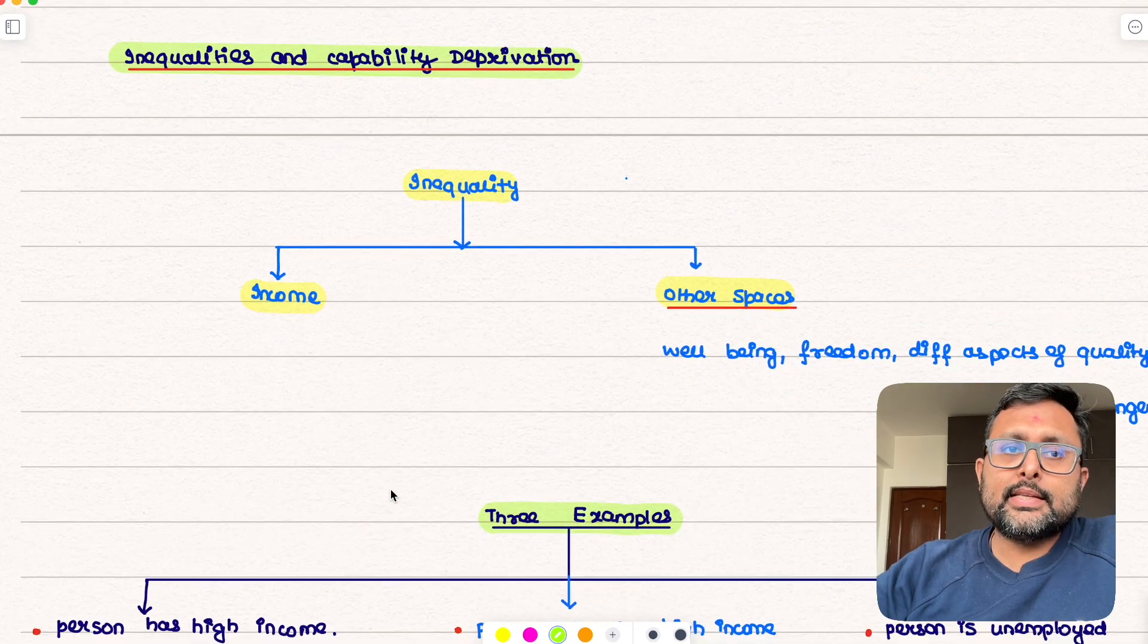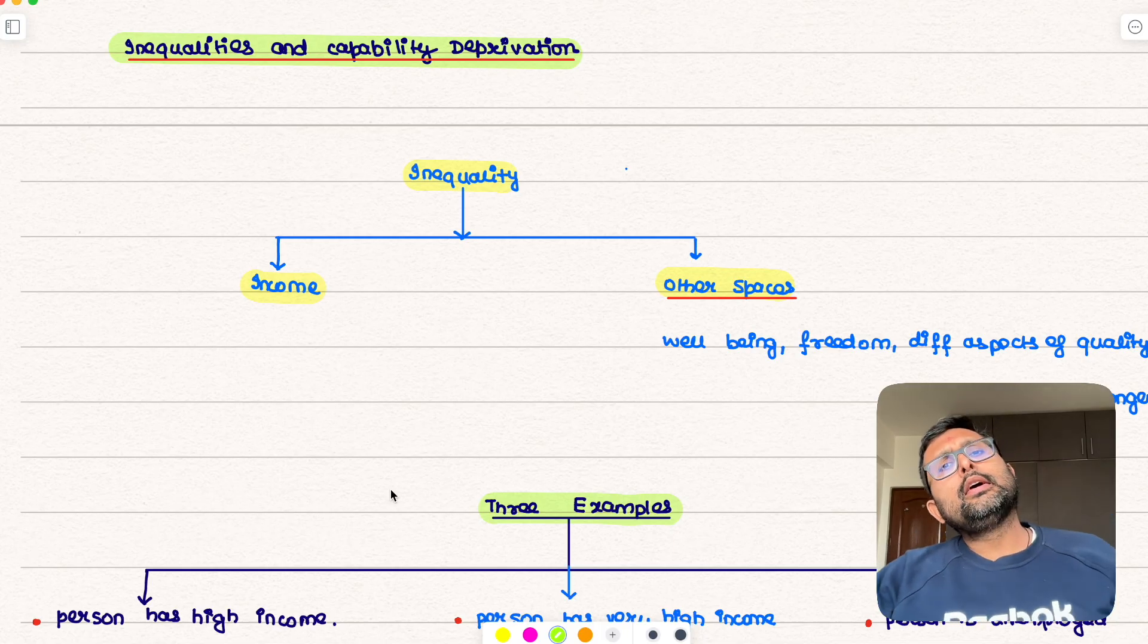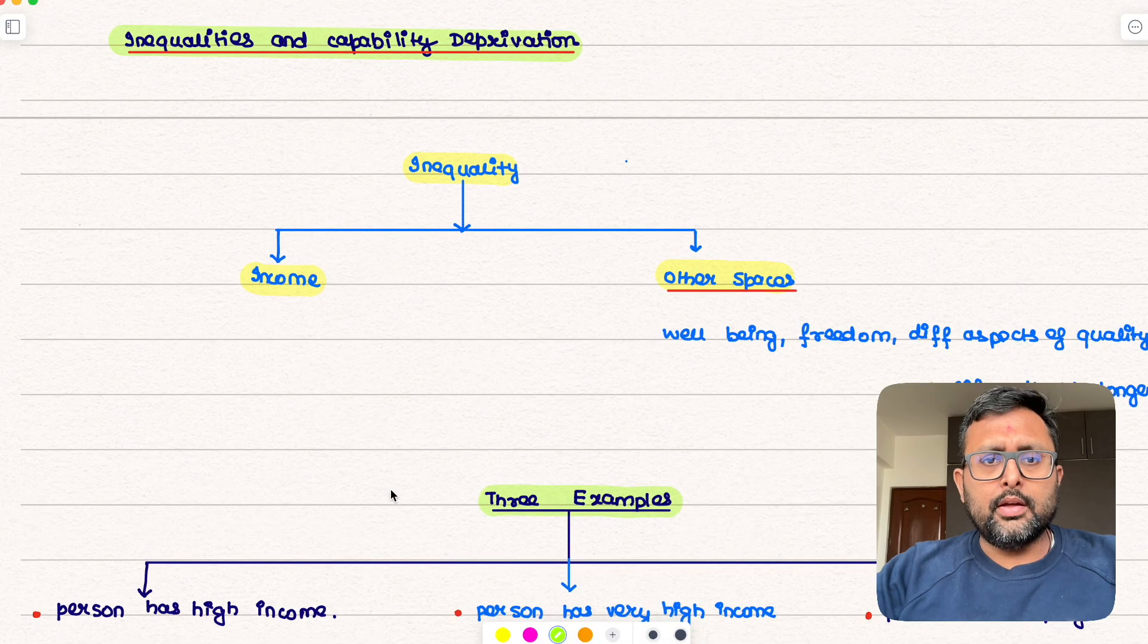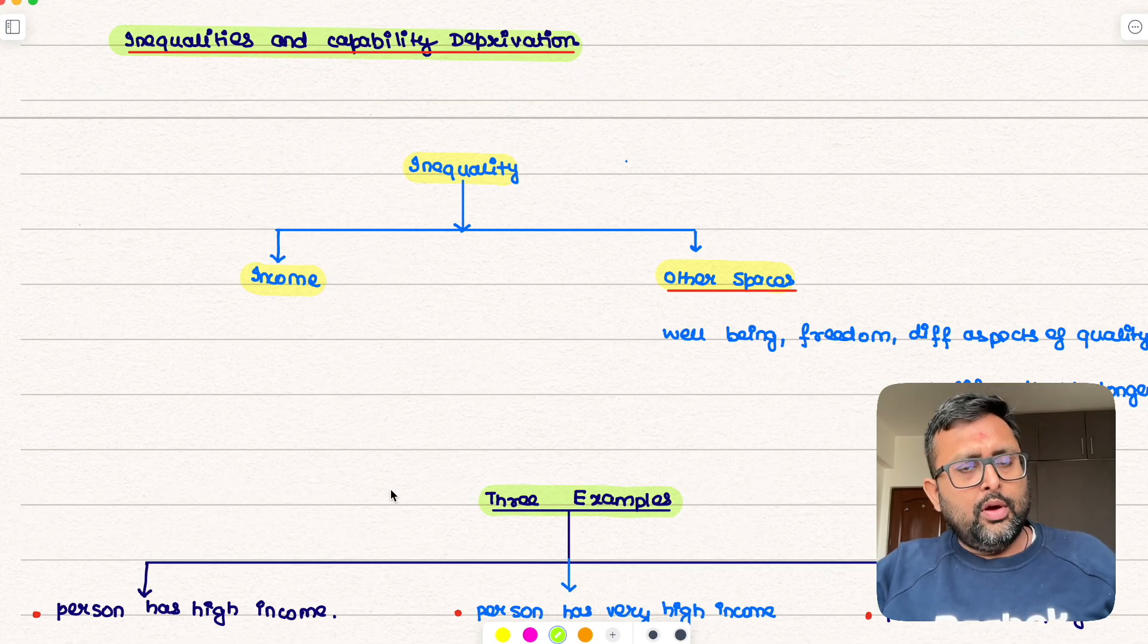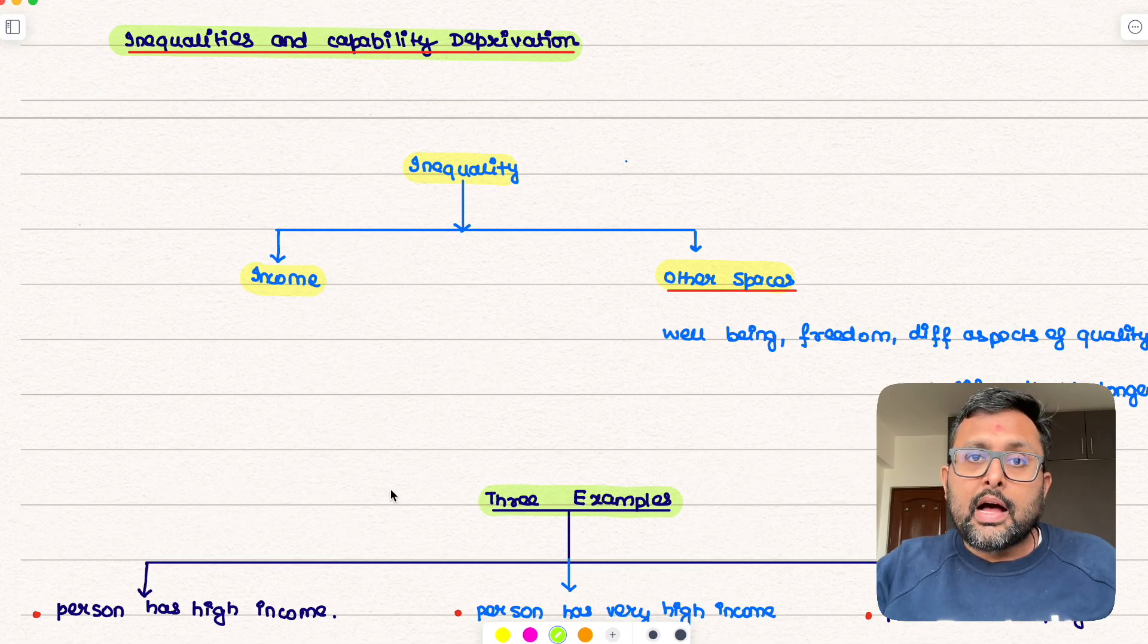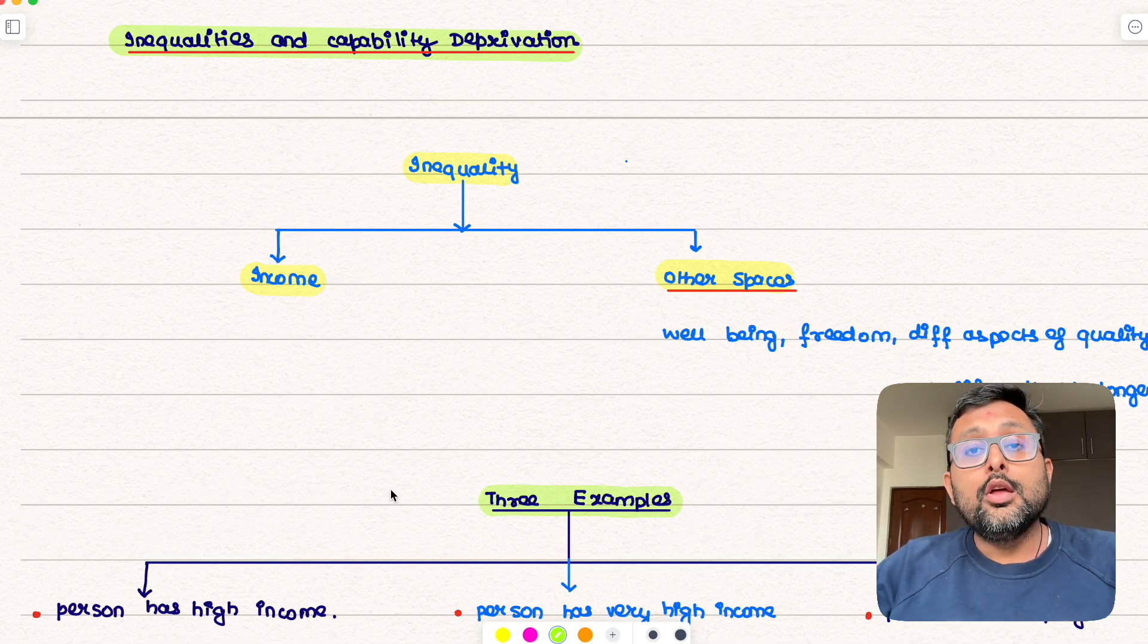And then he goes on in the next section talking about inequalities in capability deprivation. So you can think in terms of inequality in terms of income and in terms of other spaces. Now when you talk about other spaces, income we understand, okay you have more income than me, that we understand. But maybe I have more well-being than you, maybe I have more freedom than you, maybe somebody has more or has better health than other person. Those are also inequalities and he is saying you also have to look at them.